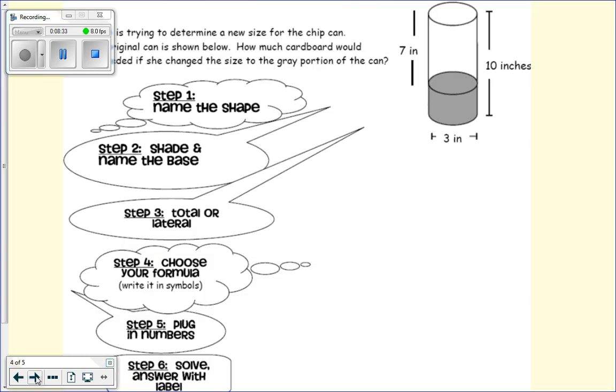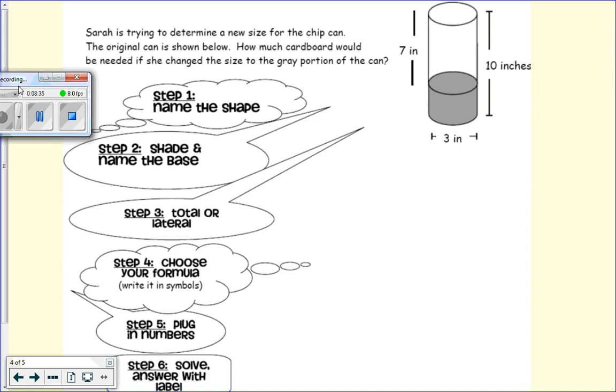All right. Let's look at our next one. Sarah's trying to determine a new size for the chip can. The original can is shown below. How much cardboard would be needed if she changed size to the gray portion of the can?